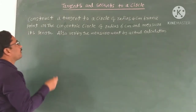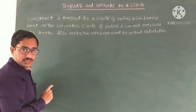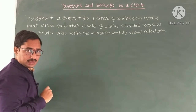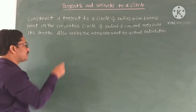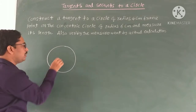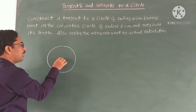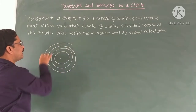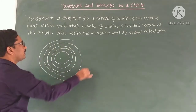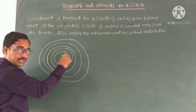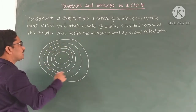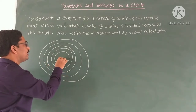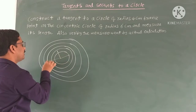We have to construct a circle of radius 4 cm and one more concentric circle. What is the meaning of concentric? The first circle has a center, and from this common center we can draw many circles with different radii. The center is common but the radius is different. So all these circles are known as concentric circles — center is unique, radii are different.